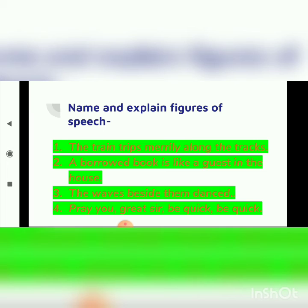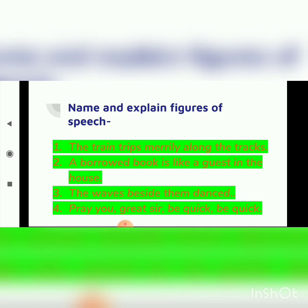Quiz question two: 'A borrowed book is like a guest in the house.' The answer is simile, because a borrowed book is compared to a guest in the house, and the word 'like' is used. Remember, more than one figure of speech may apply — it is also alliteration because the B sound is repeated in 'borrowed' and 'book'.